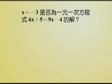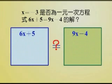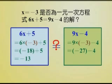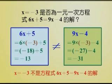接着我们再来判断X等于负3是不是一元一次方程式6X加5等于9X减4的解呢。X等于负3代入左边6X加5，得到6乘以负3加5，等于负18加5等于负13。X等于负3代入右边9X减4，得到9乘以负3减4，等于负27减4等于负31。因为左边不等于右边，所以X等于负3不是方程式6X加5等于9X减4的解。